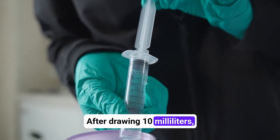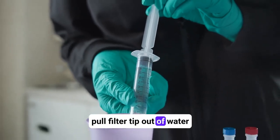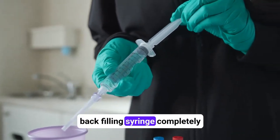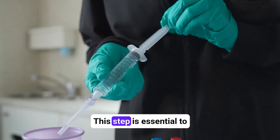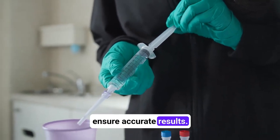After drawing 10 milliliters, pull filter tip out of water sample, and then pull plunger back, filling syringe completely with air. This step is essential to ensure accurate results.